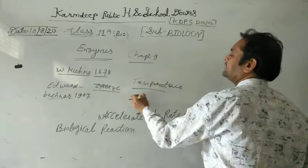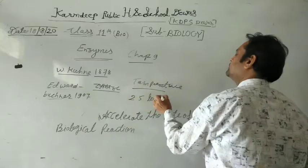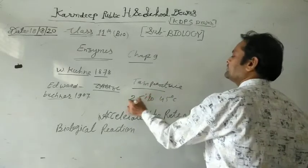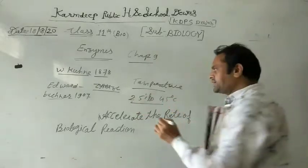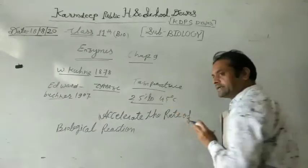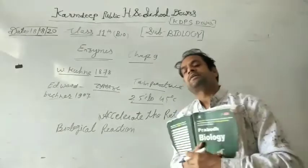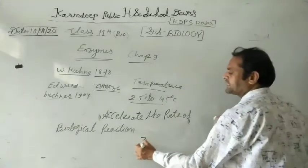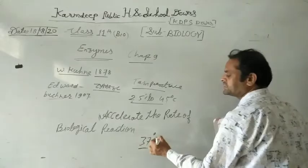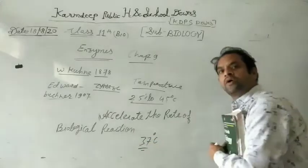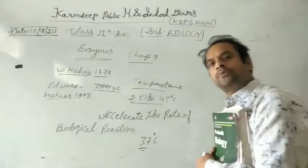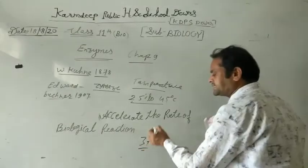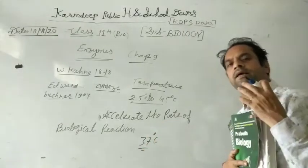Temperature: enzymes work between 25 to 45 degrees centigrade. Mostly 37 degrees centigrade is the critical temperature for their function.